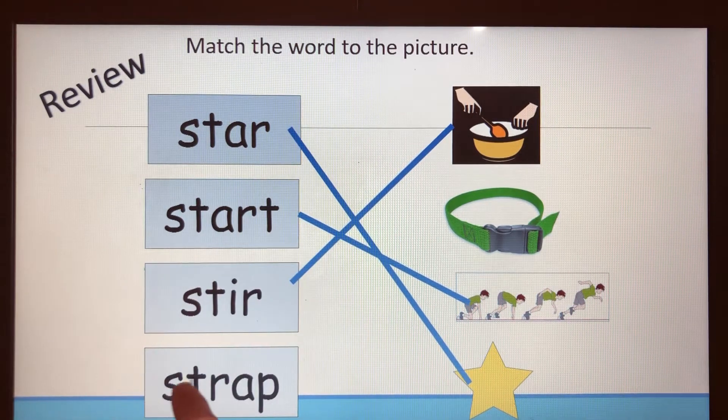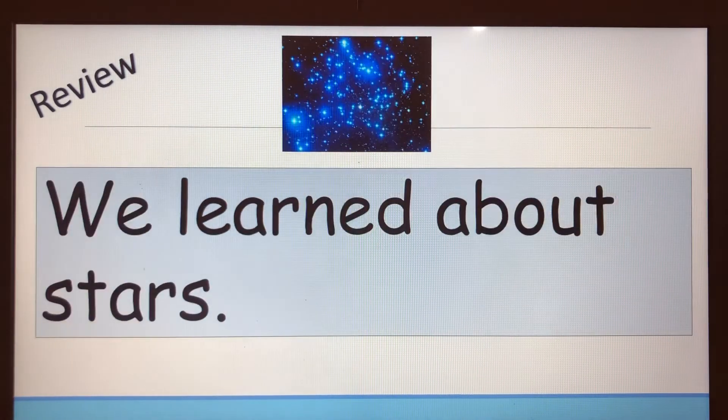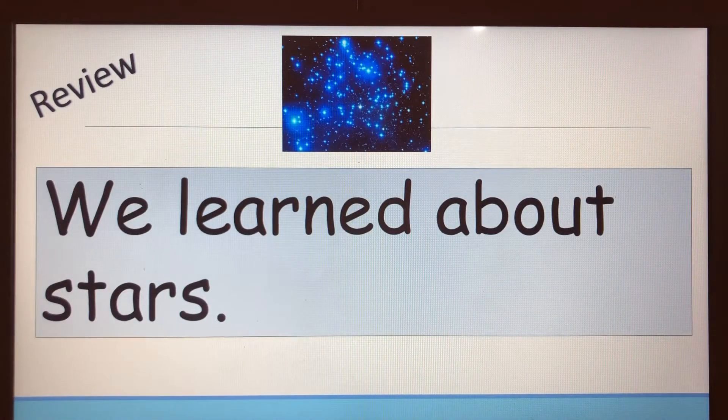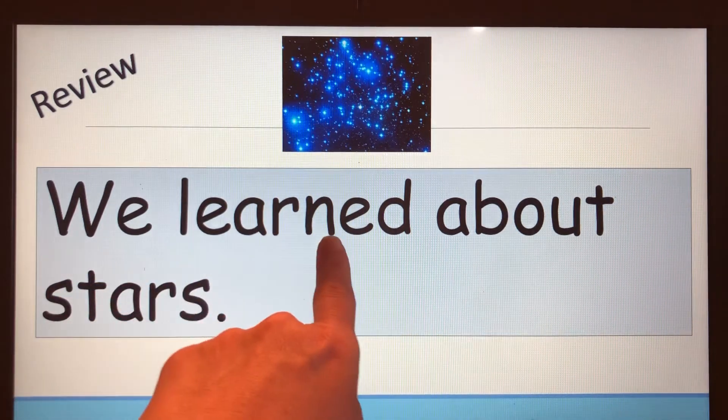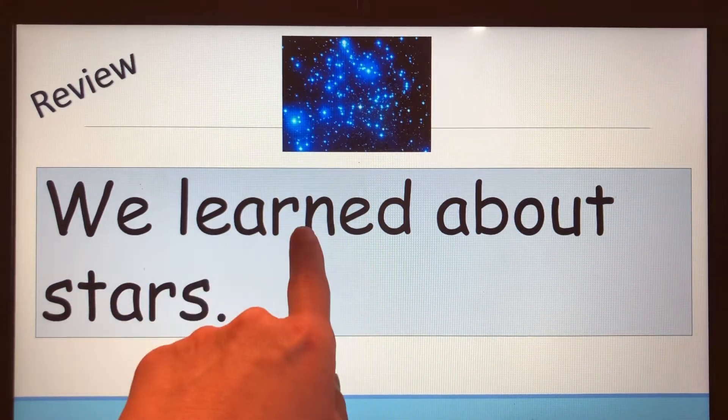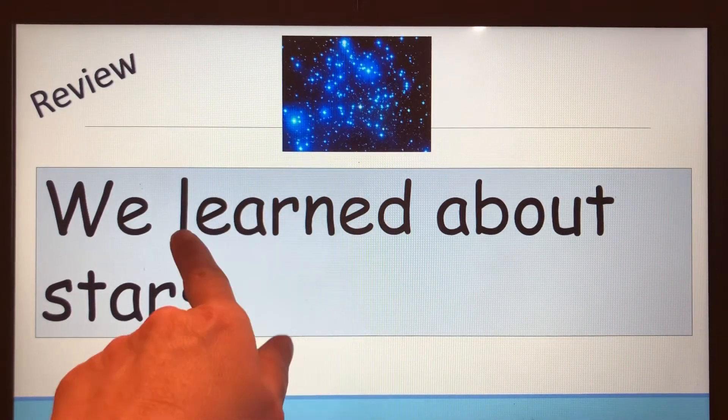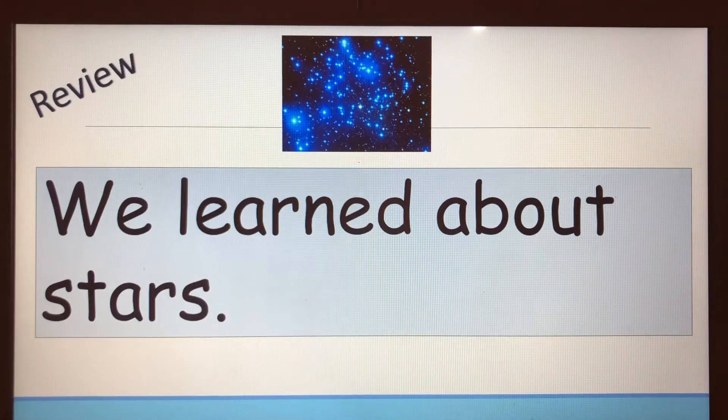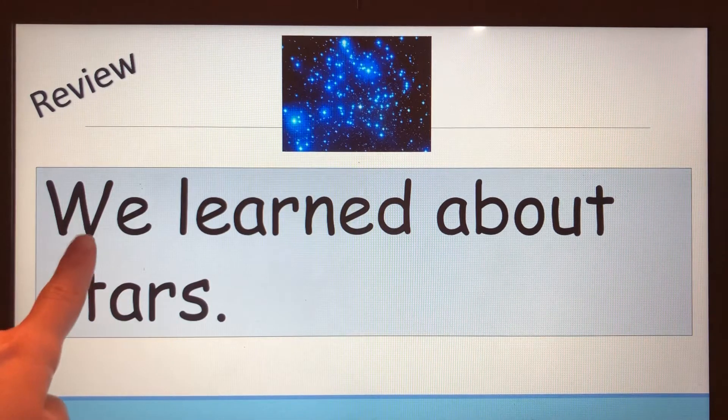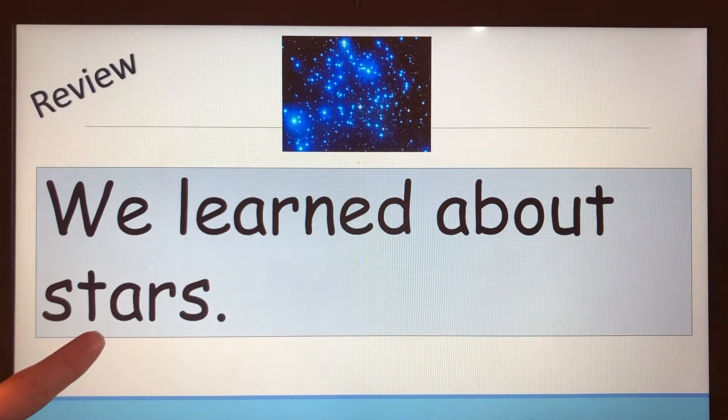Now we have a few review sentences. I see a sight word we just learned—it's the word learn, but it has ED at the end. How do we pronounce that word? Learned. Good job. Let's read the sentence together: We learned about stars.